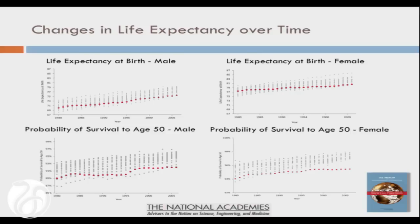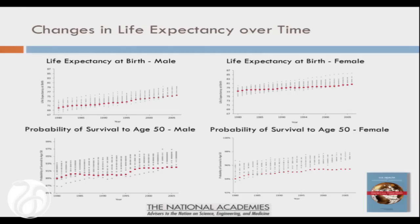This is an alarming graph from our report showing life expectancy across the age spectrum, ranking the US relative to other countries. Beginning at birth all the way through till about age 75, life expectancy in the US is always the lowest or near the lowest. It's not until you reach age 75 that US life expectancy has some kind of advantage. This is not a problem you could blame on diabetes or diseases occurring in middle age — it's occurring beginning with childhood and with the first moments of life.